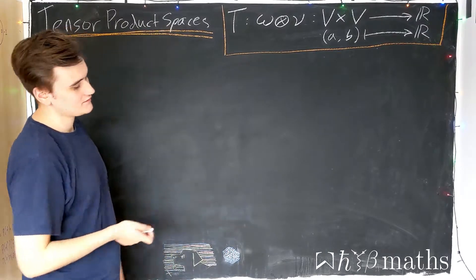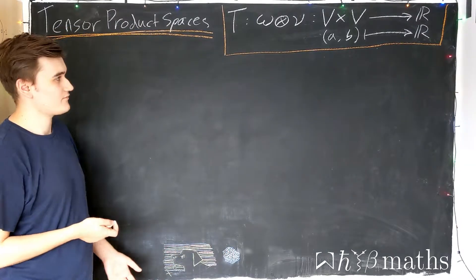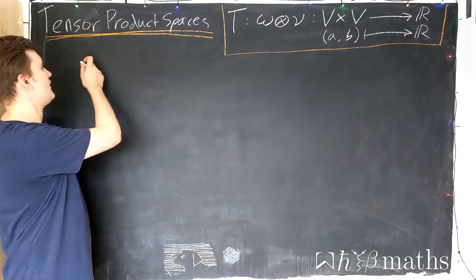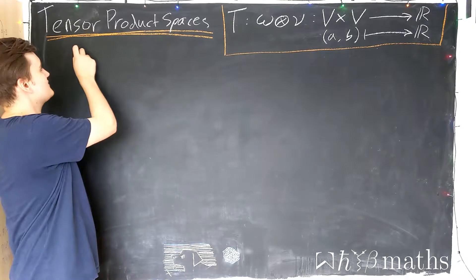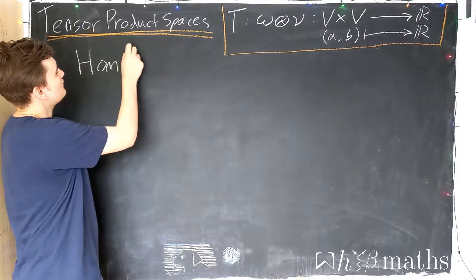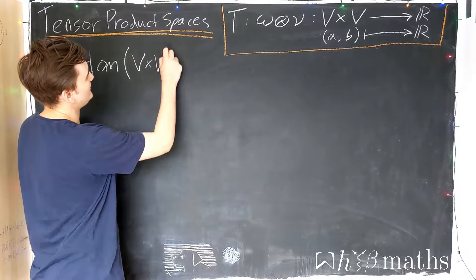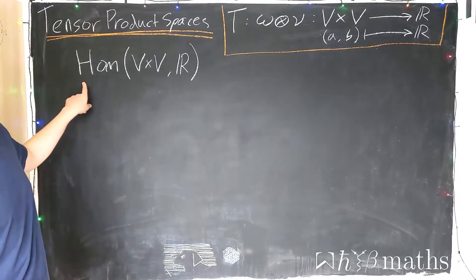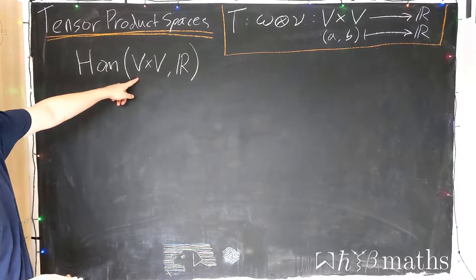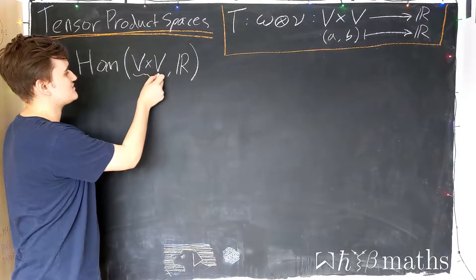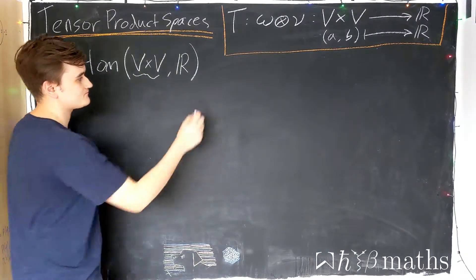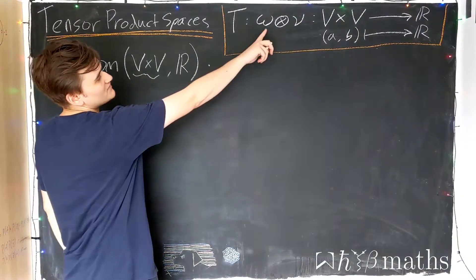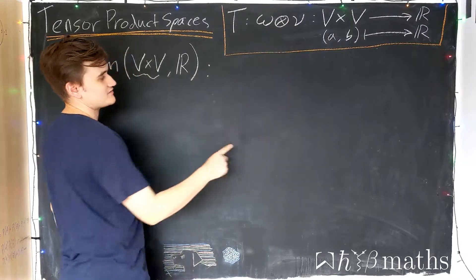So if these tensor objects are vectors, we know that they should live in some kind of vector space. What vector space do tensors live in? Well, if we define the set hom(V × V → ℝ), we understand this means the set of all multilinear maps from this Cartesian product space into the real numbers. The elements of this set should be of the form: dual vector tensor product dual vector.